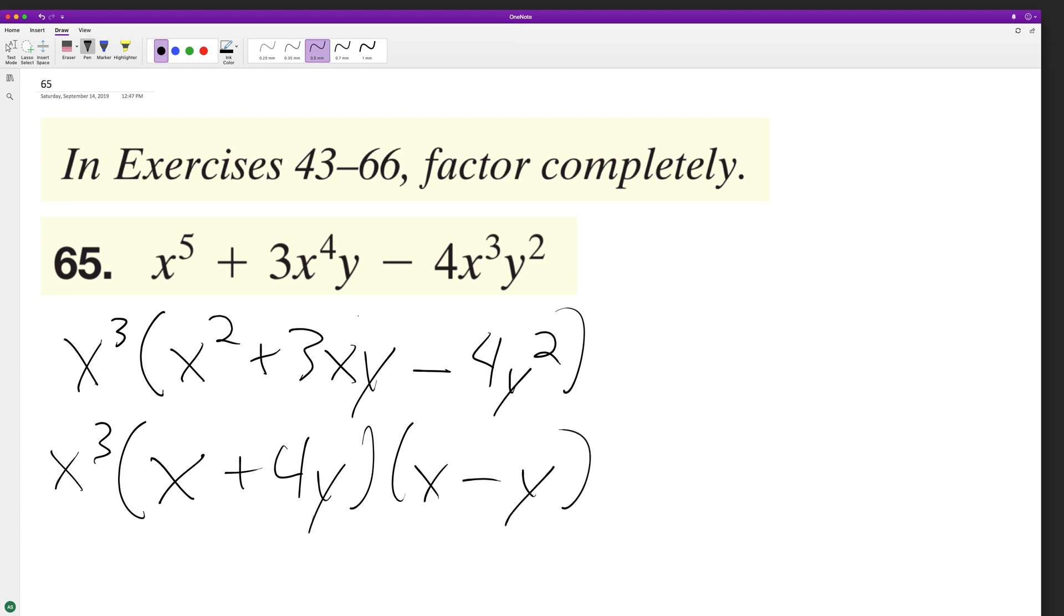I'm pretty sure that's the full factorization, but we'll check. Multiplying out x cubed times those factors, we get x squared minus xy plus 4xy minus 4y squared. Combining these, we get plus 3xy.